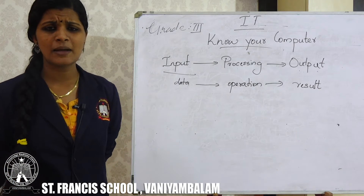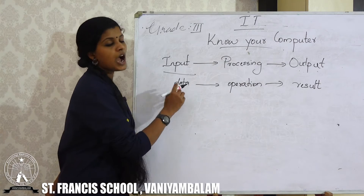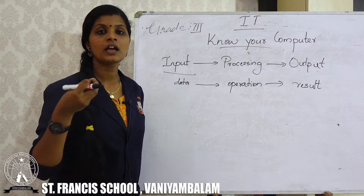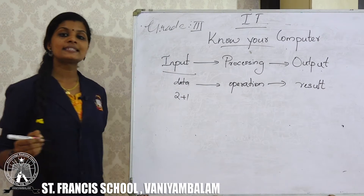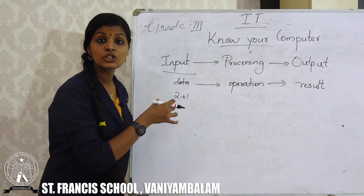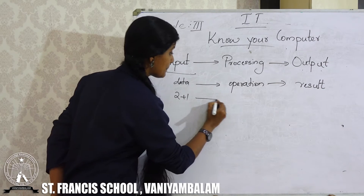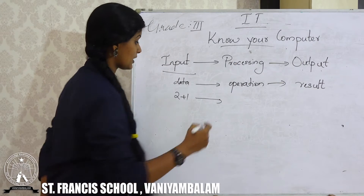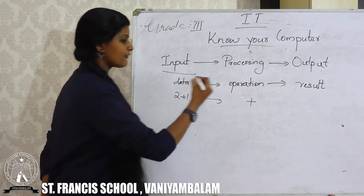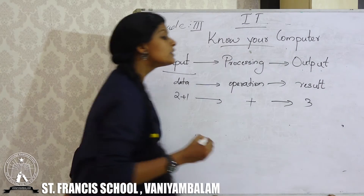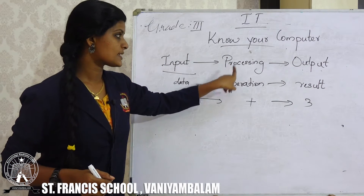There are so many examples. If we are entering a calculation, for example 2 plus 1 — this is our input. We are entering this input into the computer. When it reaches the processing side, what is the processing? Addition. Addition will happen, and after addition, what is the result? We are going to get 3. Input, processing, output.